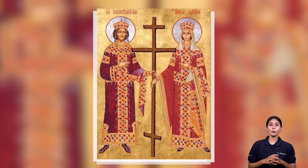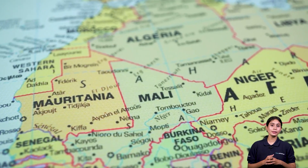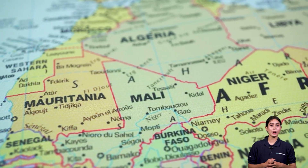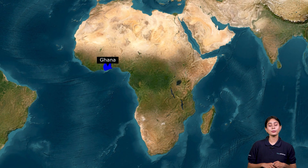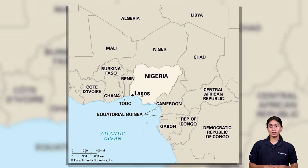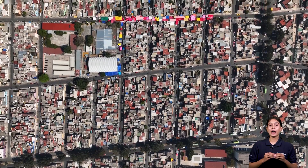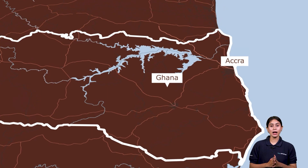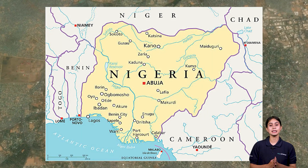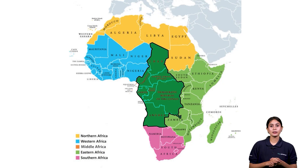Islam is the dominant religion in the north, while Christianity dominates the southern parts of the region. Western Africa was once home to empires like Ghana and Mali, which are now part of two sub-regional countries. Lagos, the former capital of Nigeria, is the most populous city. Other cities include Abidjan, Ghana's capital Accra, and Nigeria's second largest city, Kano.